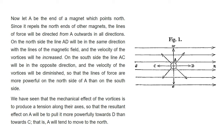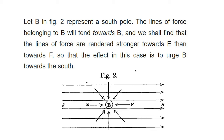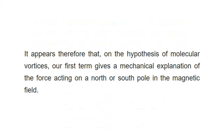That is, A will tend to move to the north. Let B in Figure 2 represent the south pole. The lines of force belonging to B will tend towards B, and we shall find that the lines of force are rendered stronger towards E than towards F, so that the effect in this case is to urge B towards the south. It appears therefore that on the hypothesis of molecular vortices, our first term gives a mechanical explanation of the force acting on a north or south pole in the magnetic field.